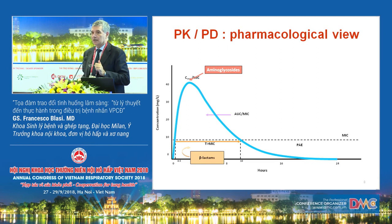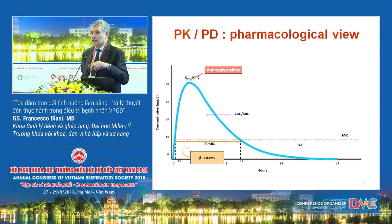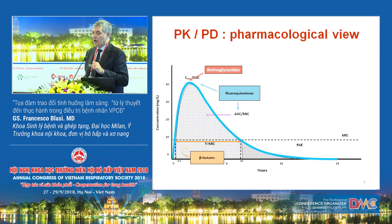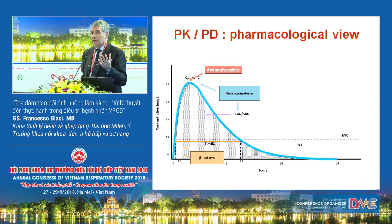For aminoglycosides, we have learned in the last 20 years that you have to use a single high dose. Why? Because you reduce the renal side effects and improve the activity, since aminoglycosides work on the maximal concentration you can reach compared to MIC. For fluoroquinolones, you have both C-max and AUC — the overall quantity of drug in the body — so you can use fluoroquinolones in different ways.